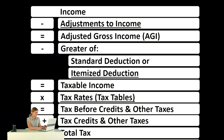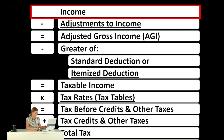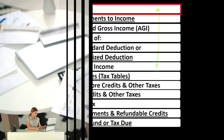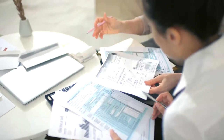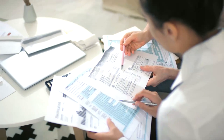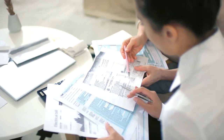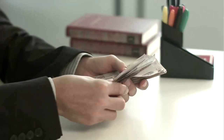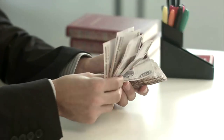Looking at the income tax formula, we're focused on line one — income. The first half of the income tax formula is essentially an income statement, just an outline with scaffolding of other forms and schedules flowing into these line items, including the Schedule C, which is basically an income statement in and of itself: business income minus business expenses, giving us net business income, which flows into line one income of the income tax formula.